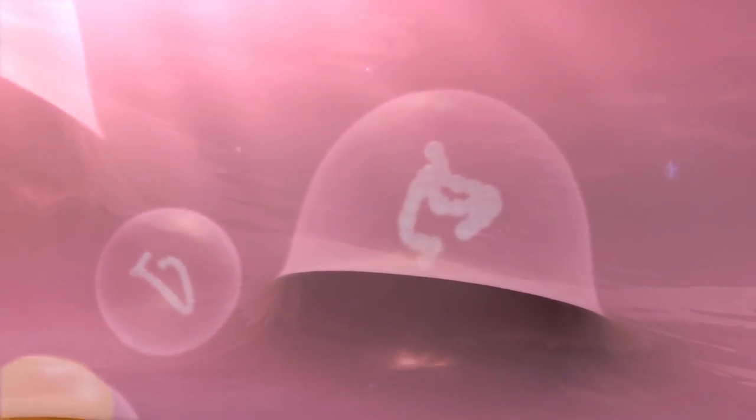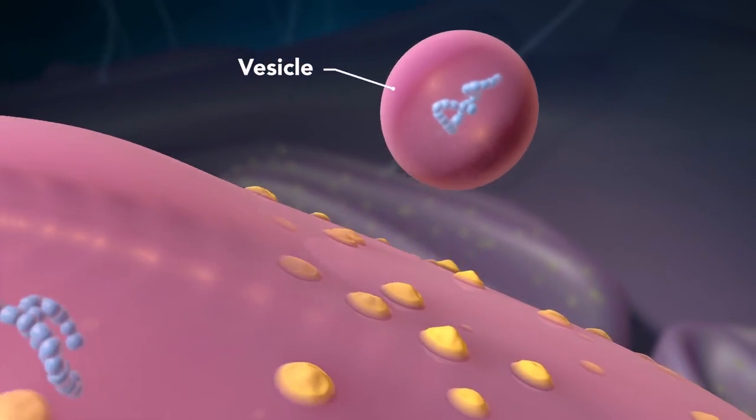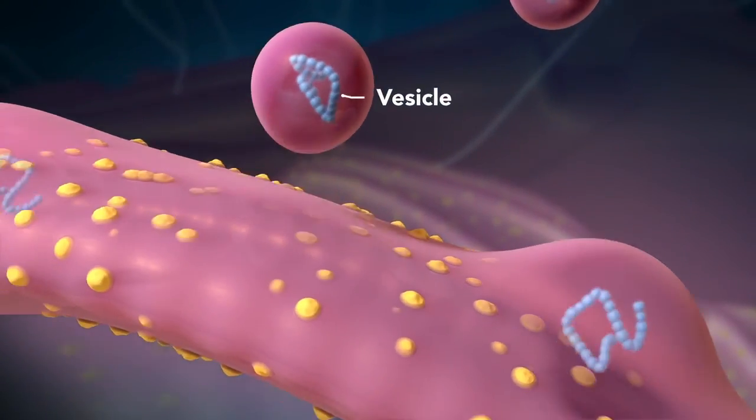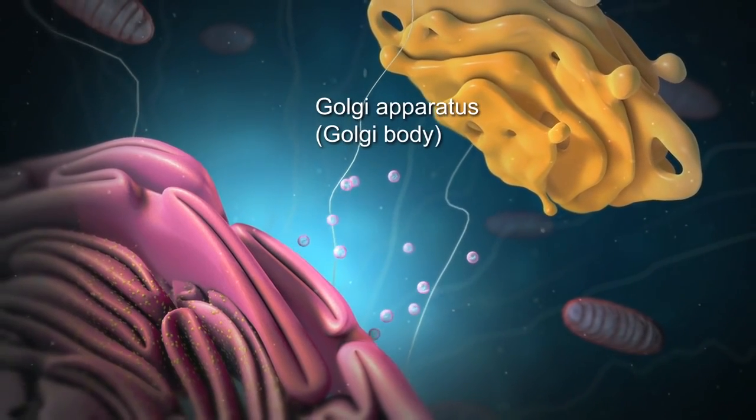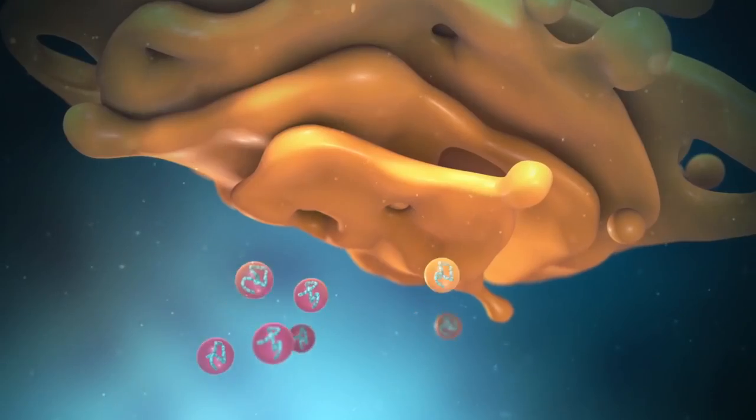Proteins and other materials emerge from the endoplasmic reticulum in small vesicles, where the Golgi apparatus, sometimes called the Golgi body, receives them.